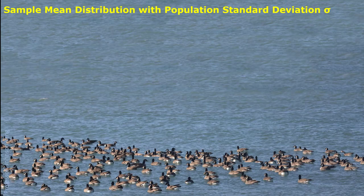From one population, if we randomly pick up a simple sample, we can get a sample mean. The sample mean is related to the random sample, so the sample mean can be considered as a random variable.